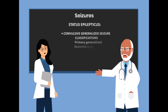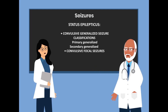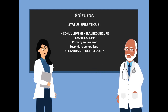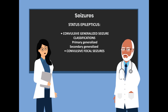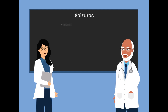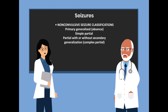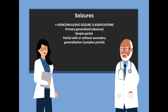The next class is status epilepticus. Status epilepticus may occur with convulsive generalized seizures. It may also occur with convulsive focal seizures, and it may occur with non-convulsive seizures, which would include the absence and the simple partial.